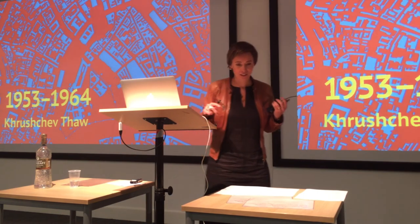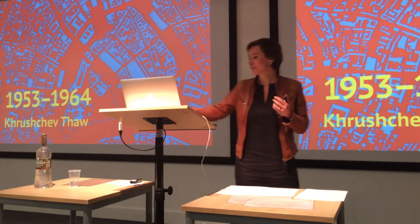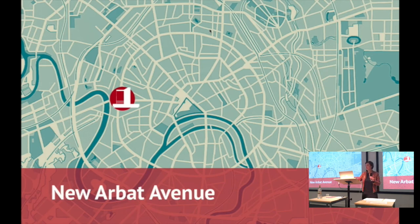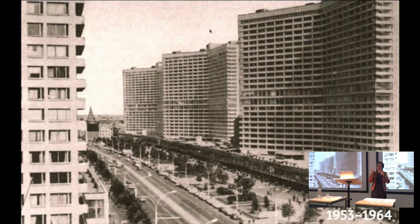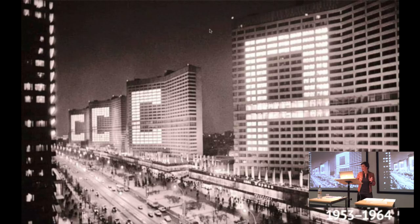At one point the Stalinist architecture didn't work anymore. The reality was terrible, and the new era needed new modern architecture. New Arbat is an avenue of this time. You can see four high-rise office buildings that look like big books. At night, the lights of the windows formed letters. I would say a really modern media facade was created here in Moscow.